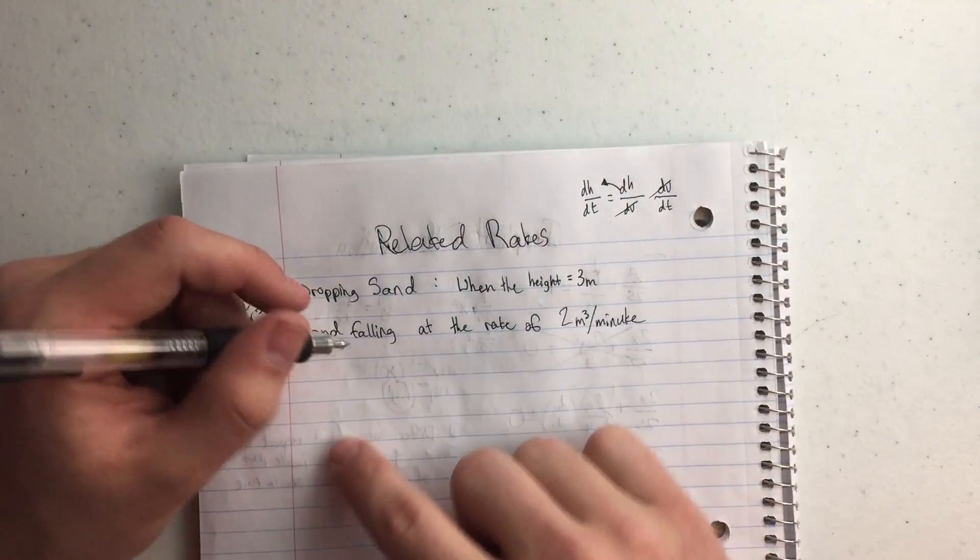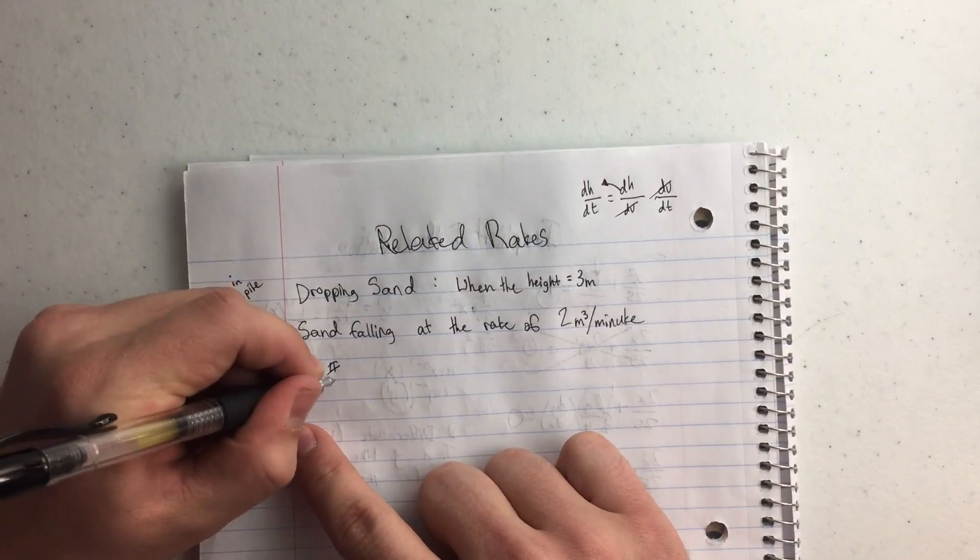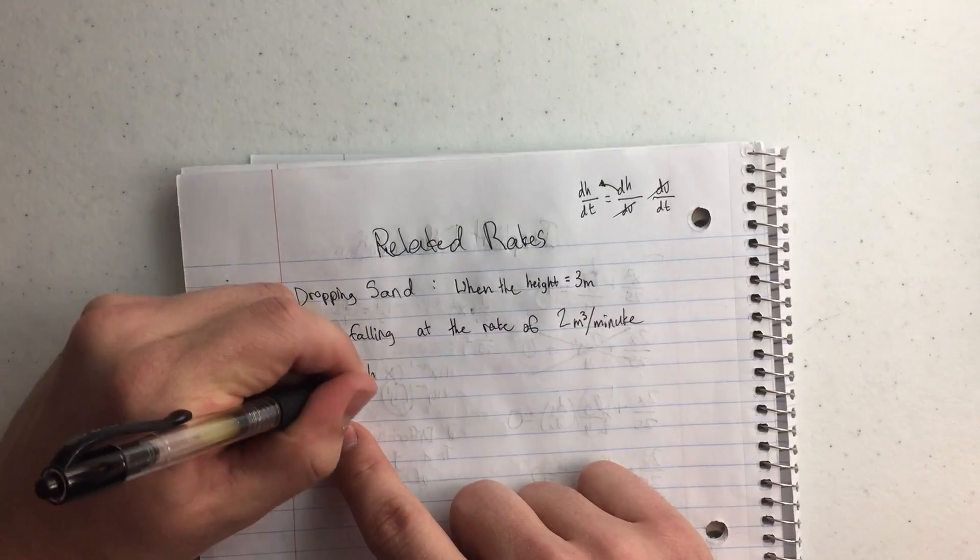Also another thing I need to write on here would be the volume of a cone, which v equals pi divided by 3r squared times the height.